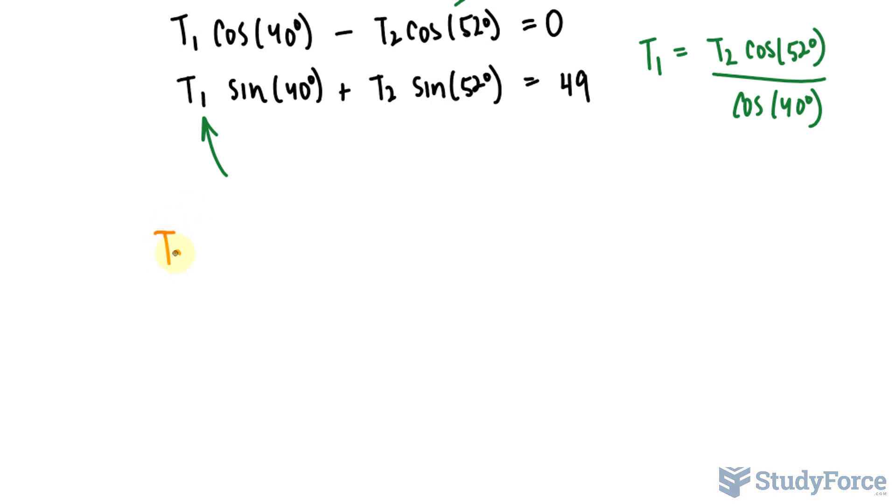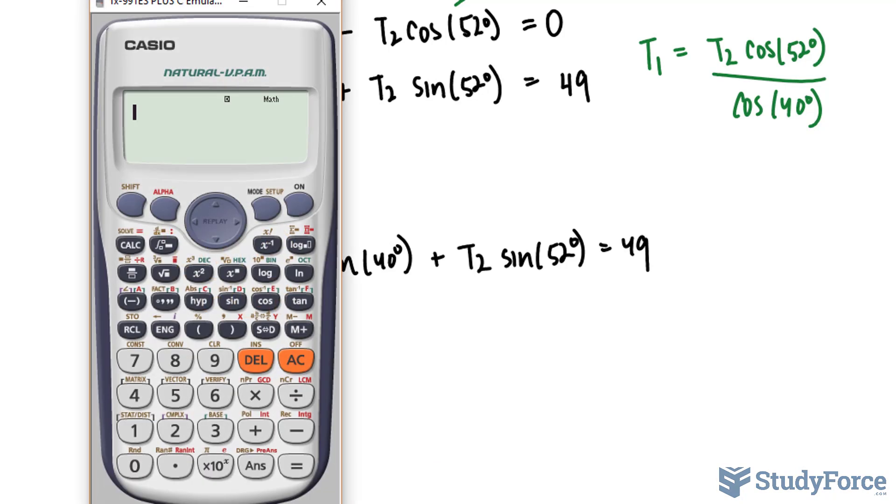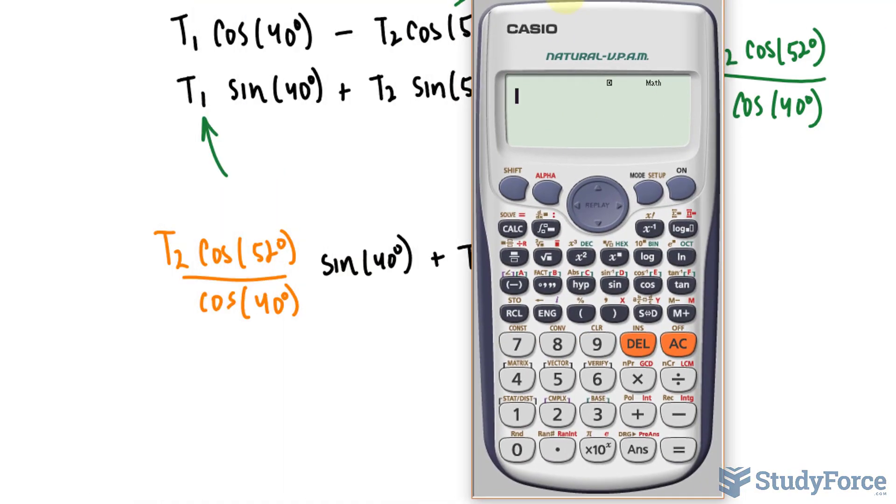Let me show you. We have T sub 2 cosine 52 degrees over cosine 40 degrees, multiplied by sine of 40 degrees plus T sub 2 sine of 52 degrees is equal to 49. All I have to do is evaluate all of these, add those numbers up, and I'll end up with a number times T sub 2, which I can then solve for T sub 2. Here's what I mean.